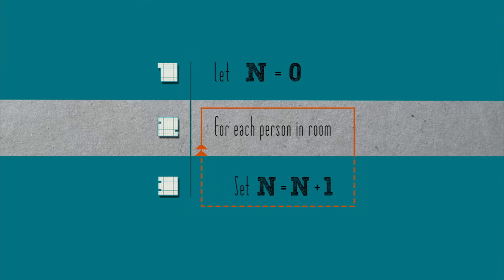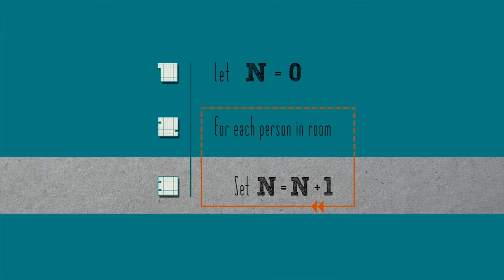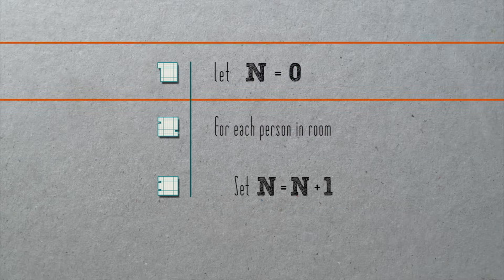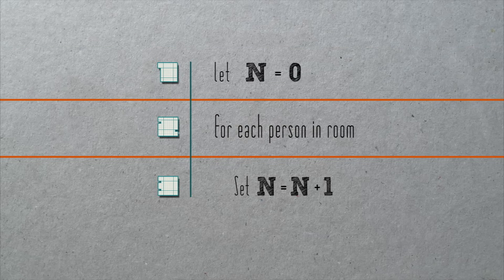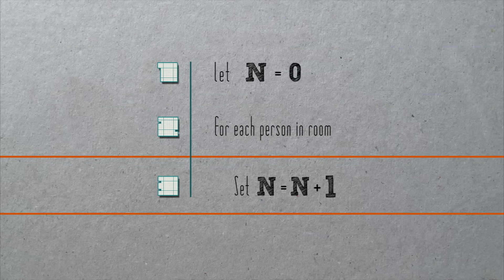Now, line two demarks the start of a loop, a sequence of steps that will repeat some number of times. So in our example, the step we're taking is counting people in the room. Beneath line two is line three, which describes exactly how we'll go about counting. The indentation implies that it's line three that will repeat. So what the pseudocode is saying is that after starting at zero, for each person in the room, we'll increase n by one.